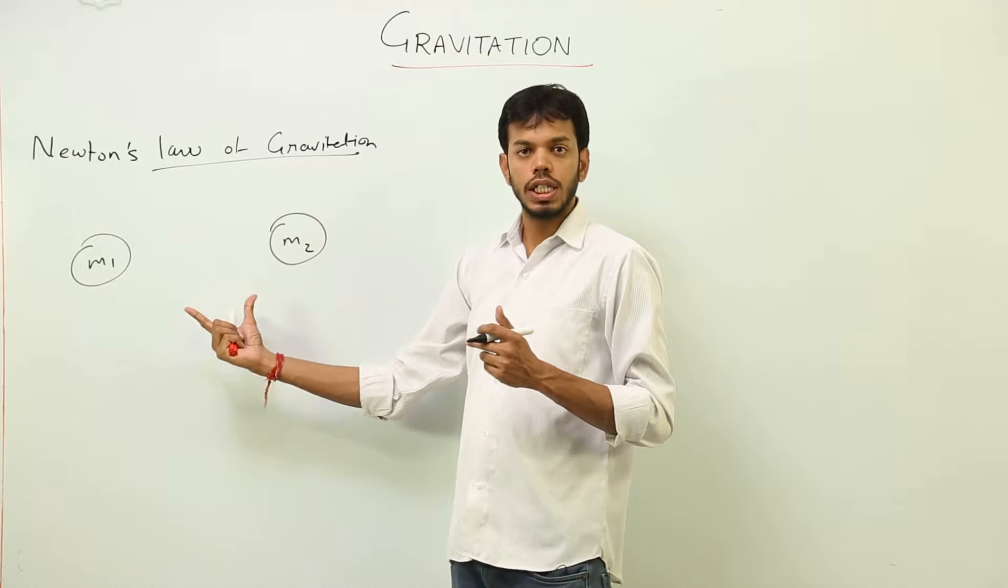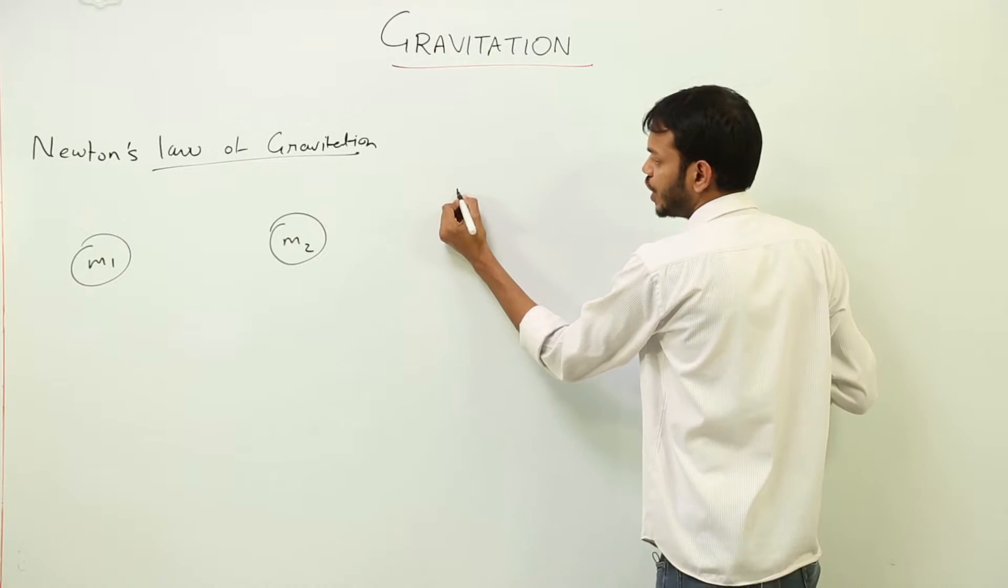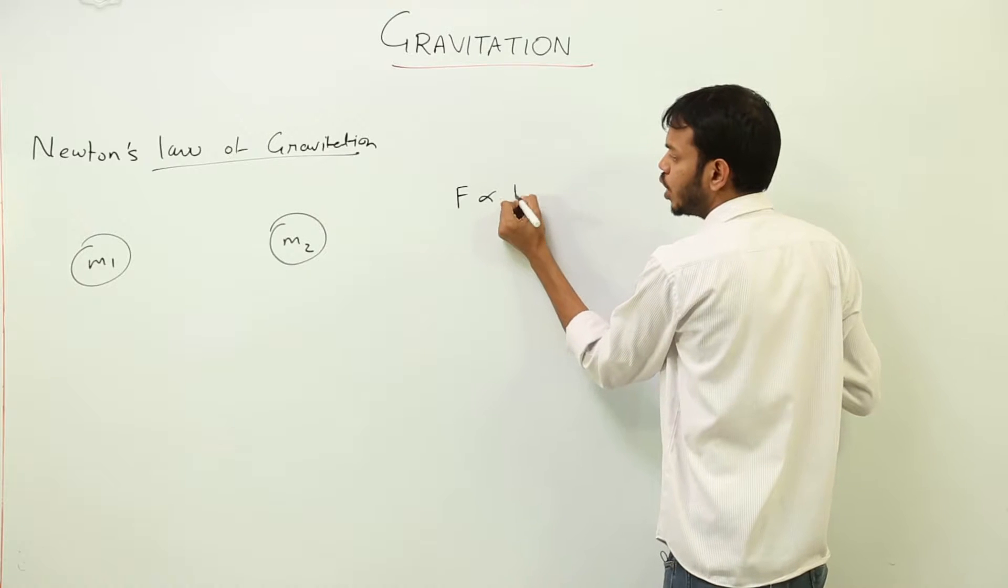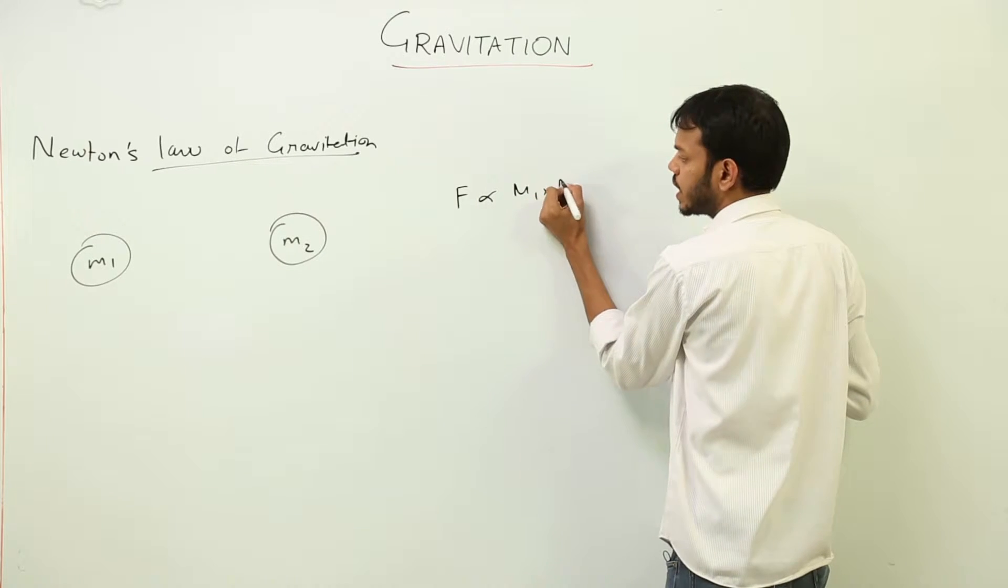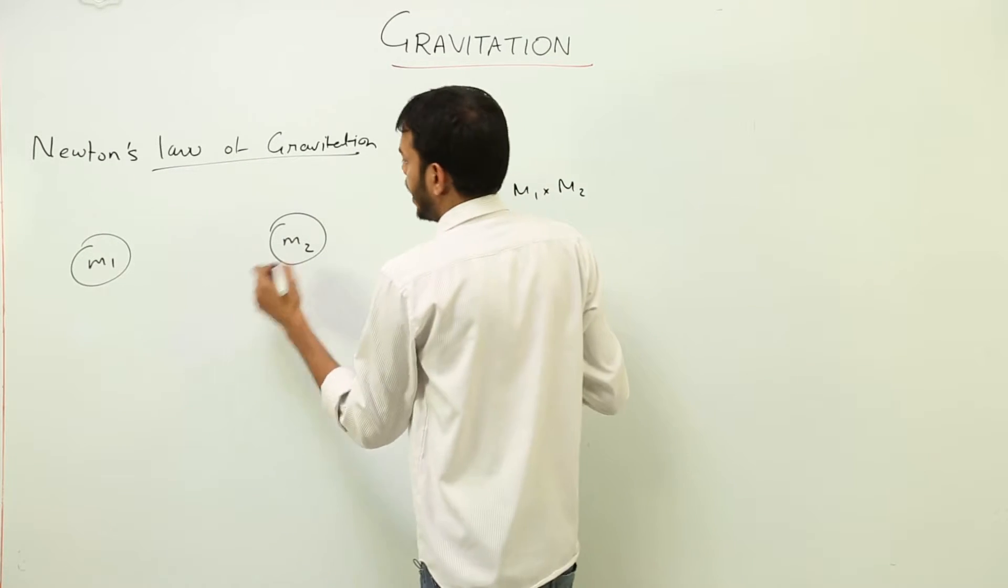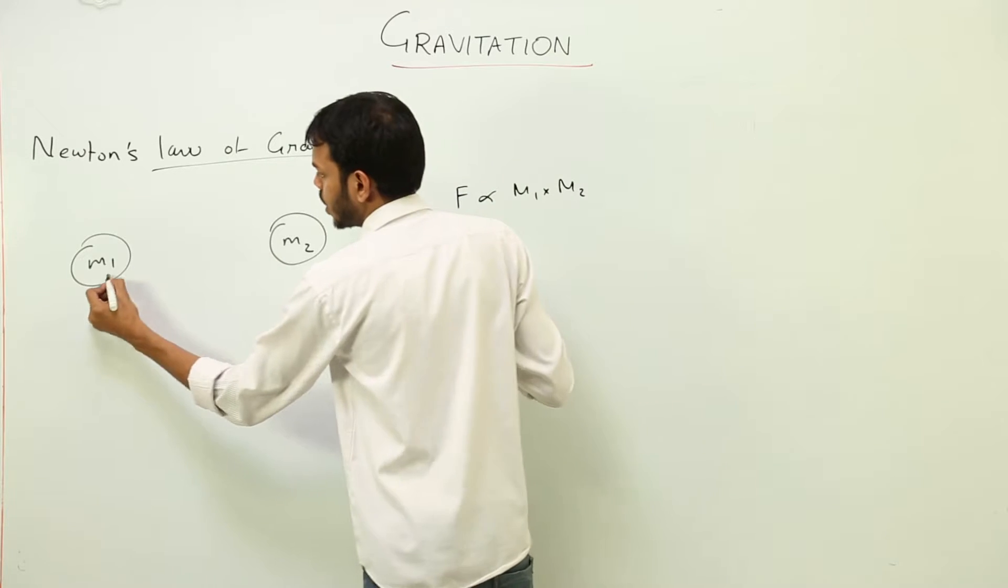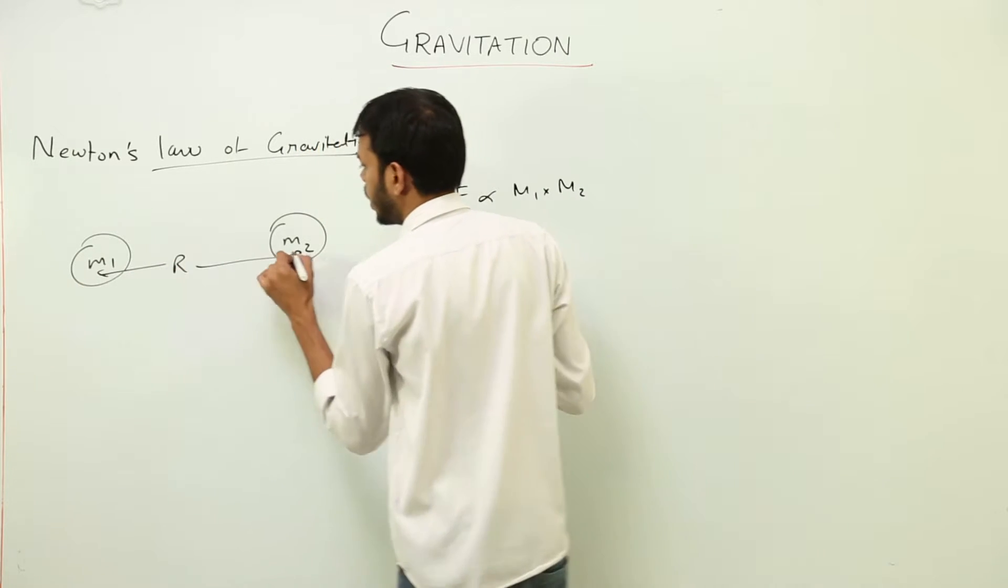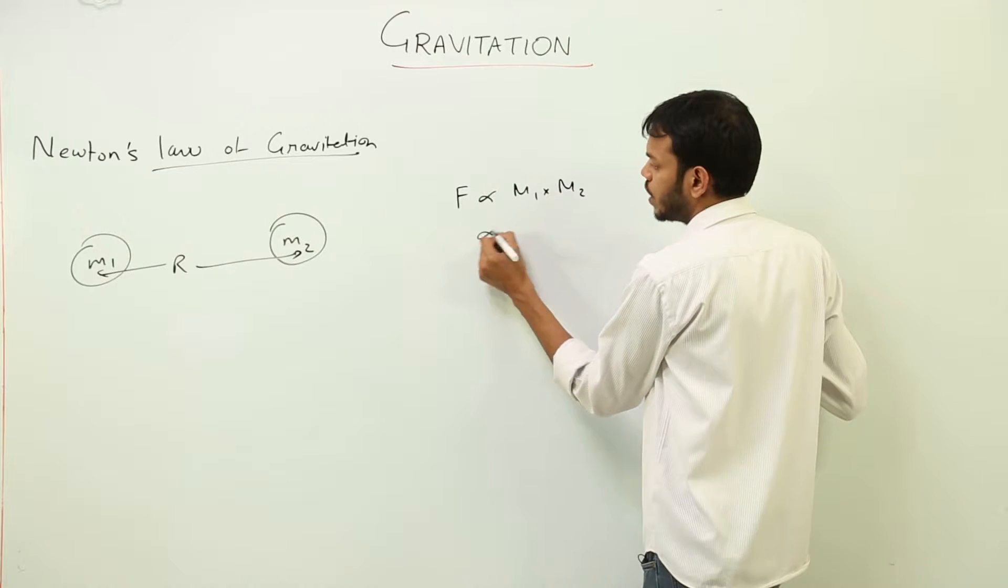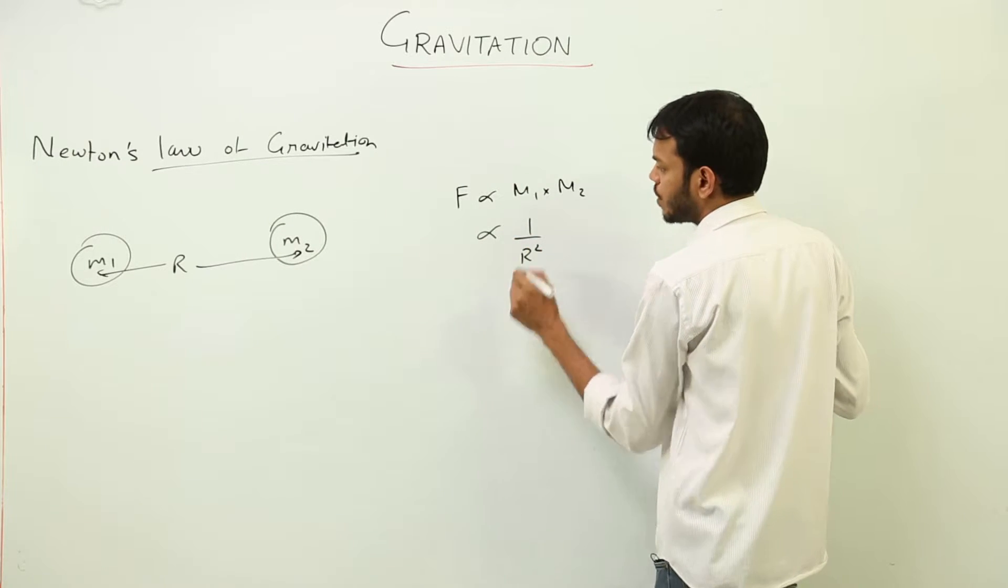So according to this law, any two bodies in this universe attract each other with a force which is directly proportional to the product of their masses and inversely proportional to—suppose the distance between them from center to center is R—this force is inversely proportional to the square of the distance between them.